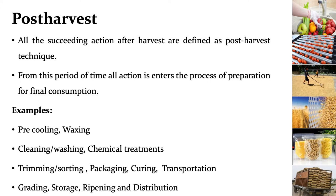Next one is post harvest. All the succeeding actions after the harvesting are defined as post harvest unit operations, which are started from the time of harvesting up to the preparation of product for the final consumption. It is a central link between the producer and the consumer, which also includes the best utilization in a profitable manner. For example, using peel or seeds, which are the waste material after processing, used in an auxiliary industry to fetch more prices.